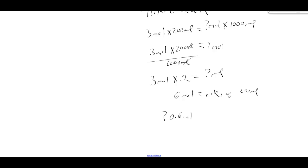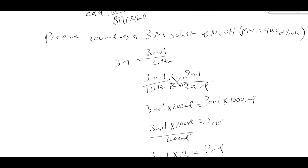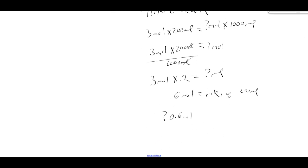And so your sodium hydroxide is 40 grams per mole, so we say 0.6 moles times 40 grams per mole is going to equal 24 grams.